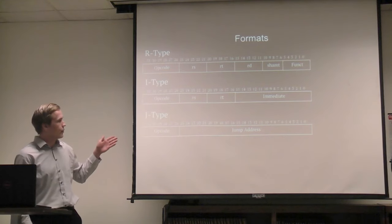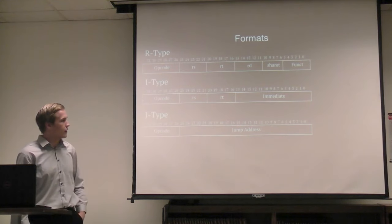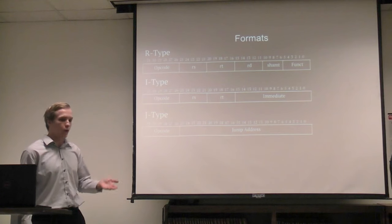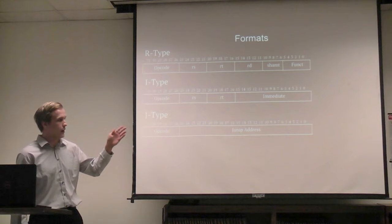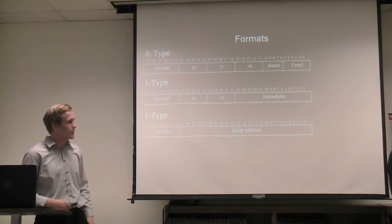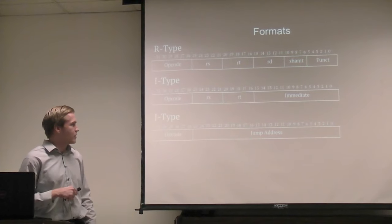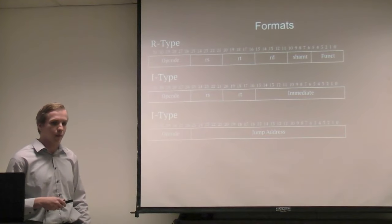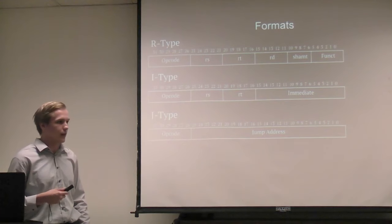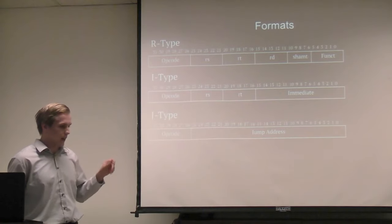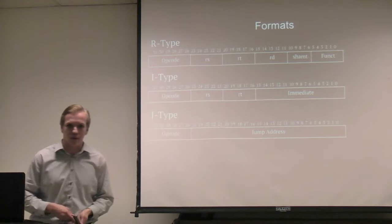Next we have our I-type, with the opcode, RS, and RT fields. RS and RT can be source operands, and RT is also a destination for load word or store word. Branch instructions are also done with I-type. We have a 16-bit immediate value that will be sign-extended. For J-type, the opcode specifies the jump — a jump or jump-and-link — and we have the jump address that is sign-extended and concatenated with two zeros for the effective address.